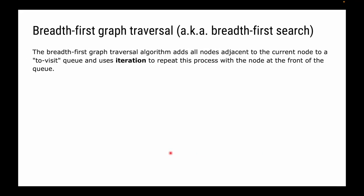Now let's consider breadth-first graph traversal. With breadth-first traversal, we add all nodes adjacent to the current node to a queue of nodes to visit, then use iteration - rather than recursion - to repeat this process, always taking from the front of the queue. So depth-first uses recursion and a stack; breadth-first uses iteration and a queue.